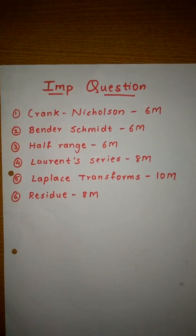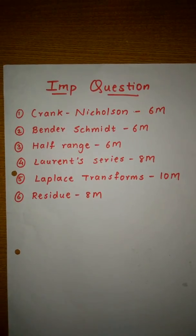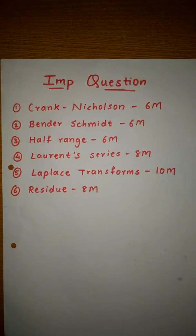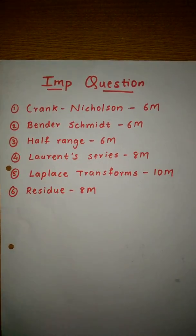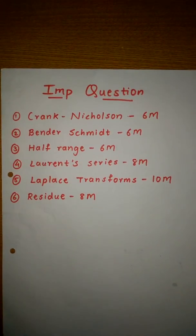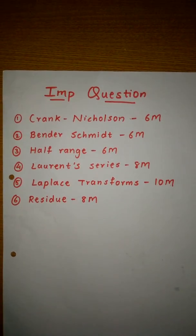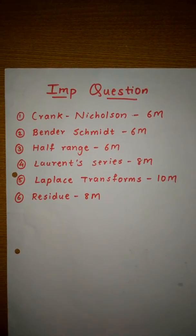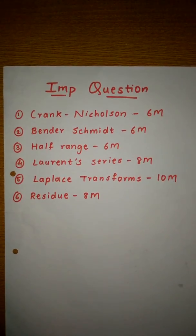This is the passing syllabus for M3. Do these things perfectly to easily attempt 40 to 45 marks of your paper, and with regular practice you can easily pass M3. Thank you for watching — do share and subscribe to our channel Shortcut to Pass MU. If you have any problem regarding M3 or any other subject, let us know in the comment box.